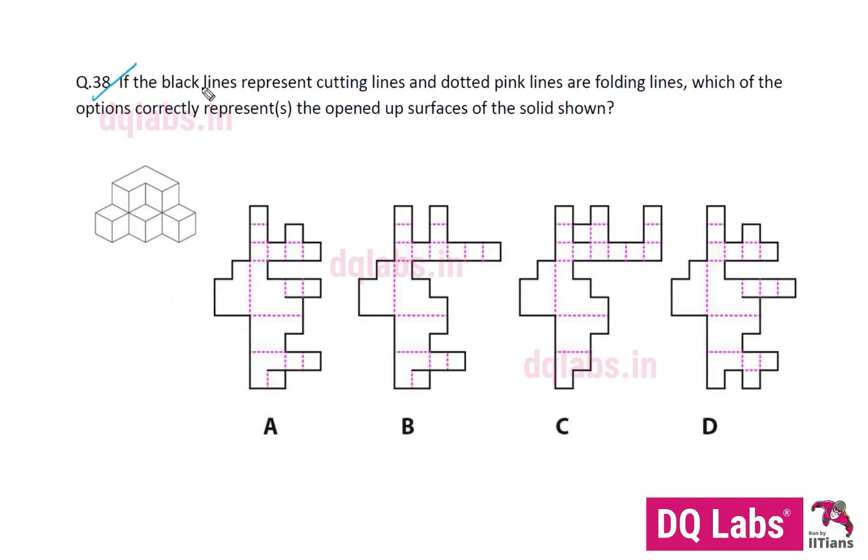Question number 38: If the black lines represent cutting lines and dotted pink lines are folding lines, which of the options correctly represents the opened up surfaces of the solid shown? This is the solid that we need. These are the opened up surfaces; some of them are, some of them are not. We should find out which of them are correct.